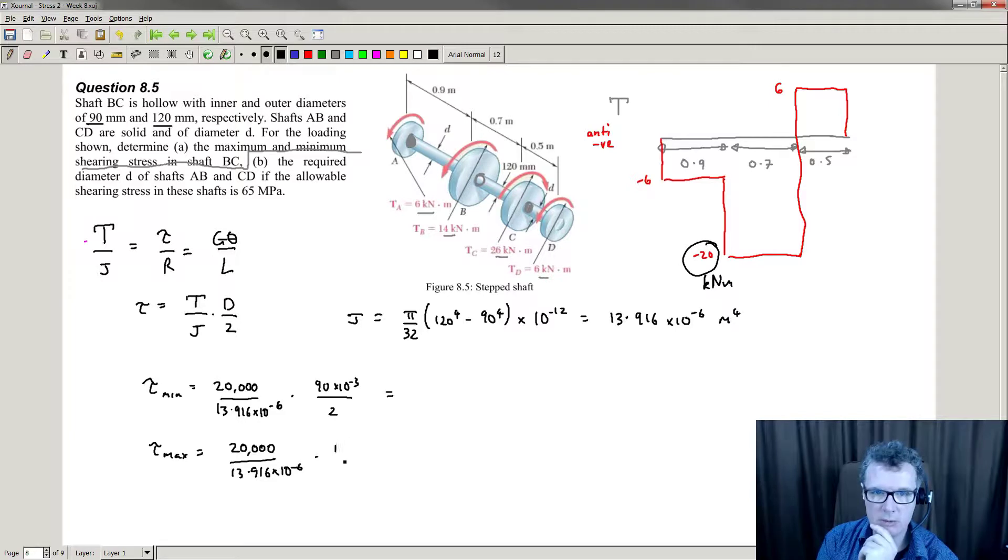And then I need to find the maximum stress, which is 120 times 10 to the minus 3. I need to find that. Okay, so the minimum stress is 64.7. I'll give it a free sig fig, 64.7 megapascals. This is 86.2 megapascals.